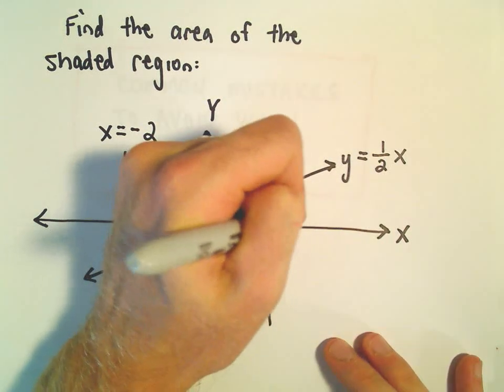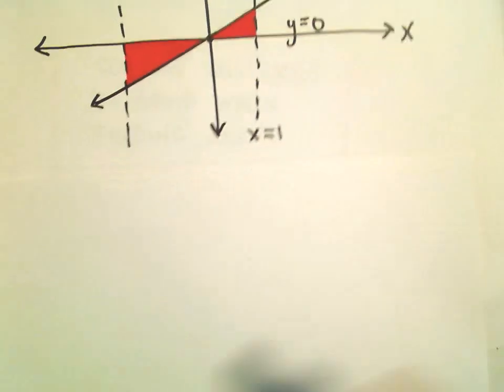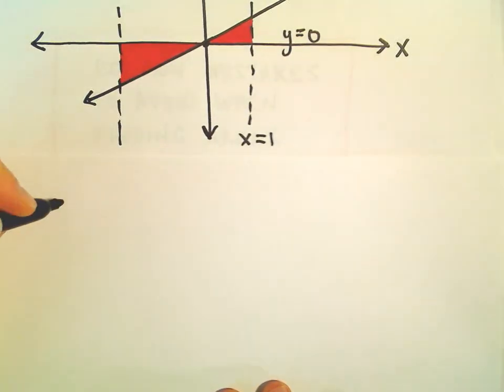So really you should think about y equals 0 as being one of the curves in this problem. To set this one up, again, we're just going to use this idea of top curve minus bottom curve.